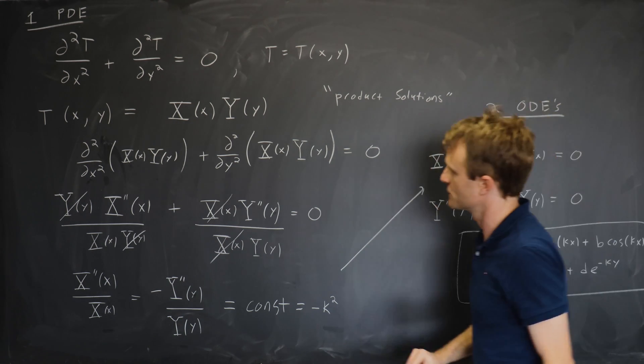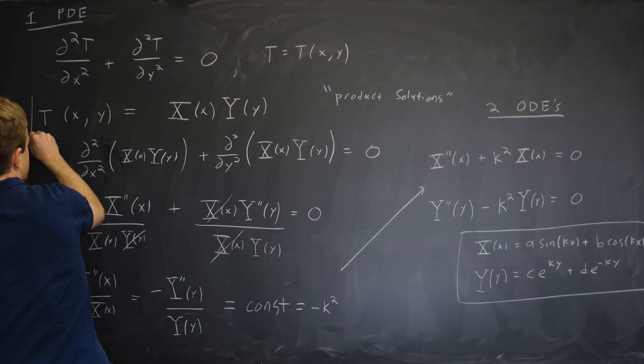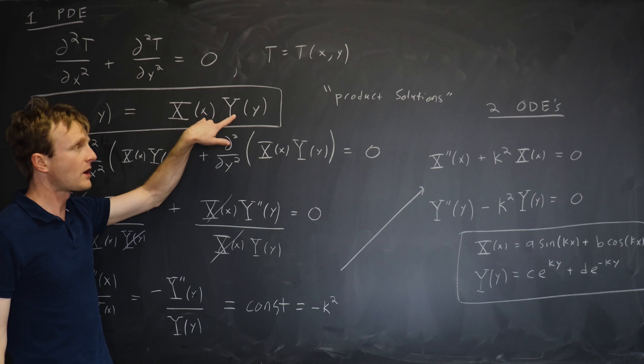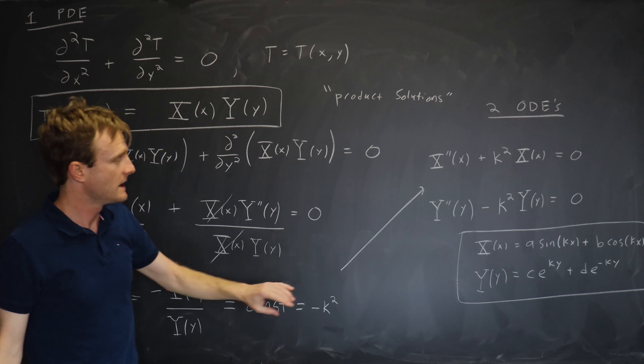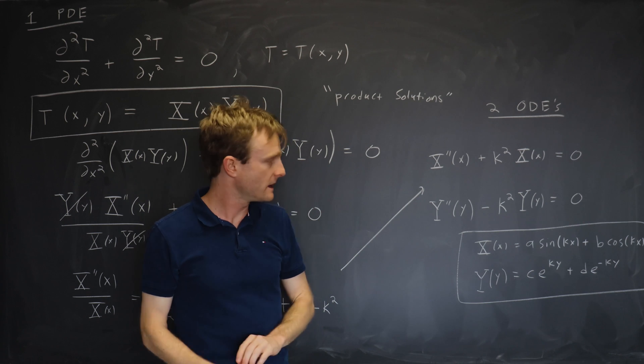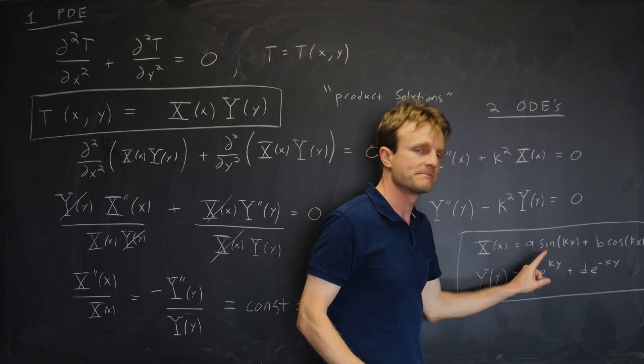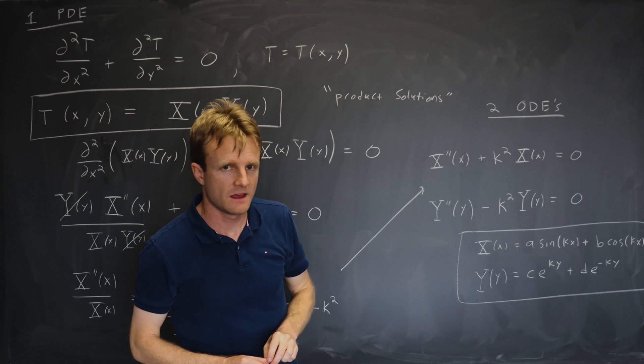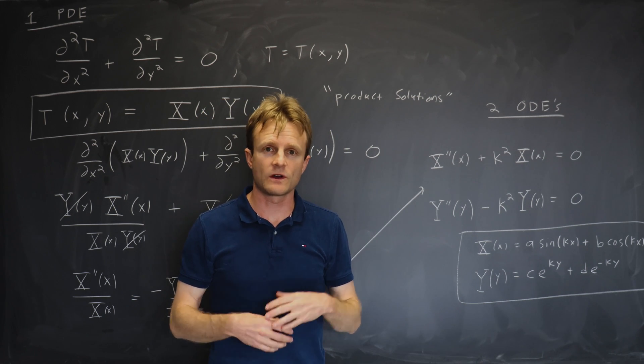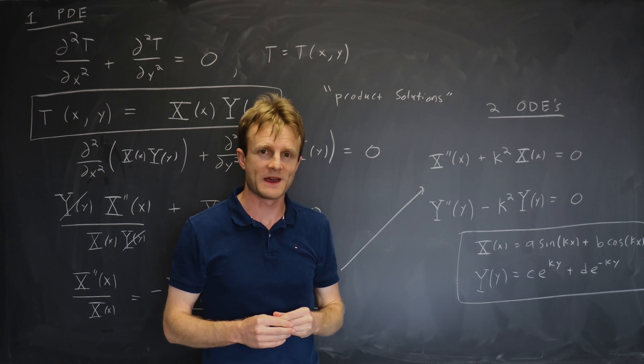So now we found a bunch of solutions. The solutions we found take the form of a product of two functions. And the functions, x and y, have five free constants in them: a, b, c, d, and k. In the next video, I'll show you how to use these solutions to solve a physics problem by this method.